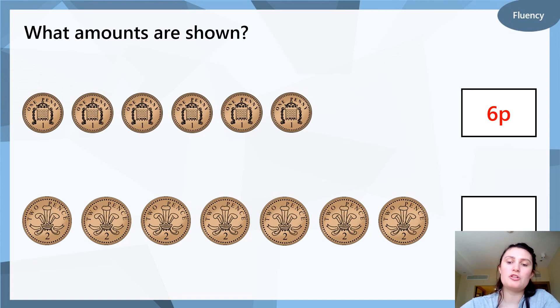The next one, they're all 2 pence or 2p coins. So we can count in twos. Ready? Let's count. 2, 4, 6, 8, 10, 12, 14. 14p.